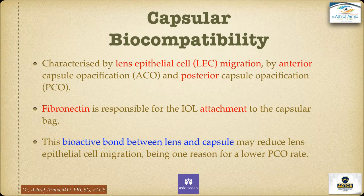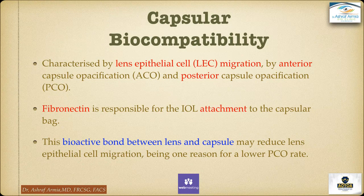Another concept is capsular biocompatibility, which is different from uveal biocompatibility. It is characterized by lens epithelial cell migration, anterior capsular opacification, and posterior capsular opacification. Fibronectin is responsible for IOL attachment to the capsular bag. This bioactive bond between the lens and the capsule may reduce lens epithelial cell migration, being one reason for lower rates of PCO.